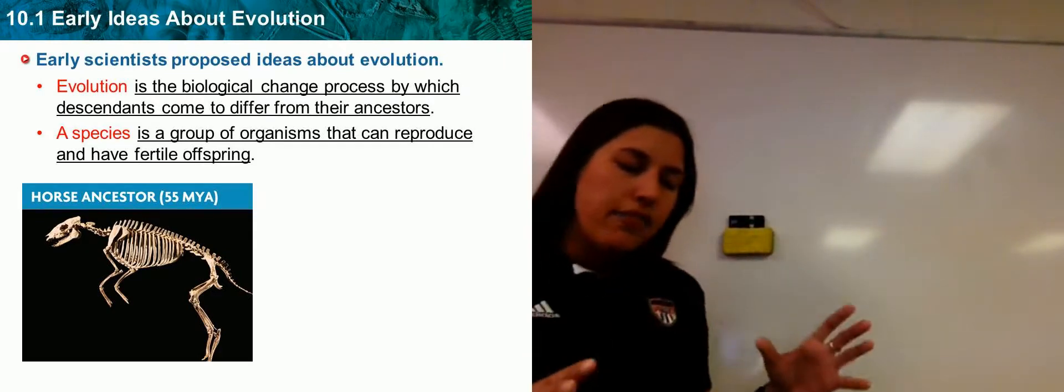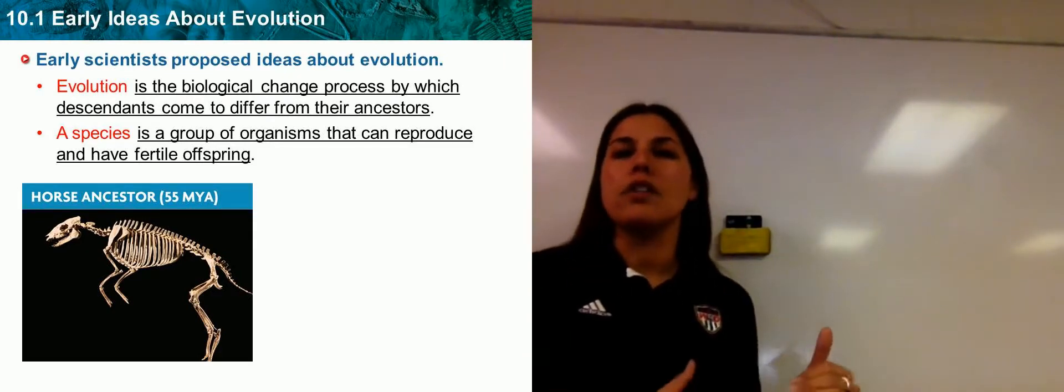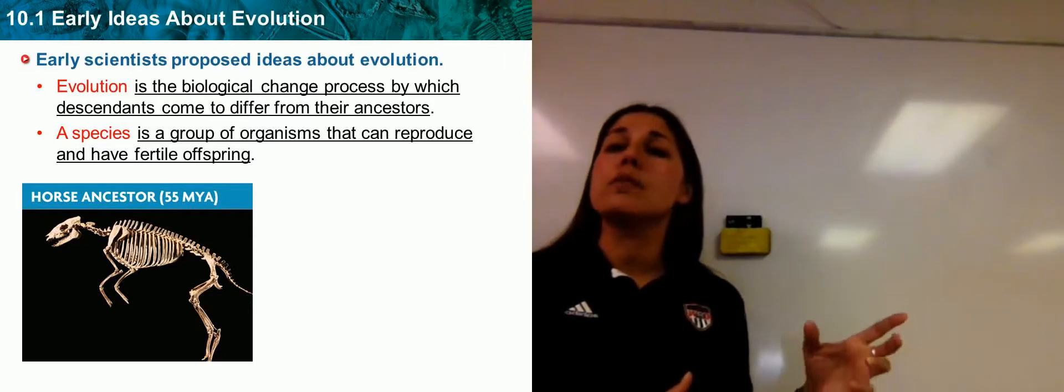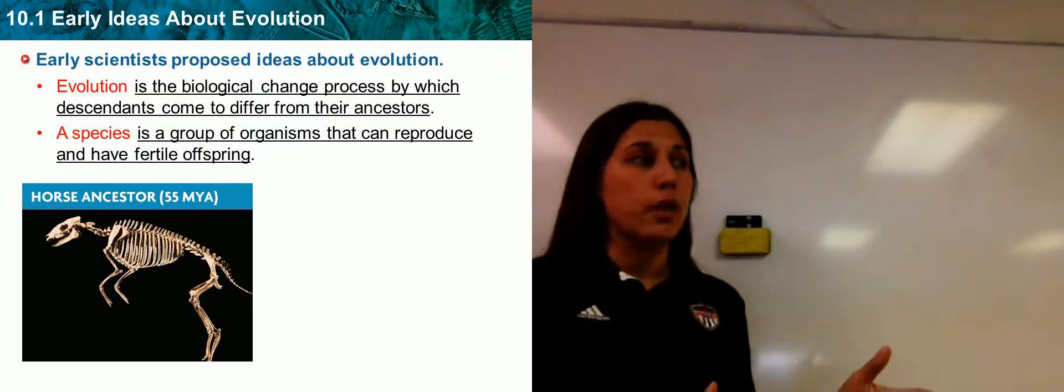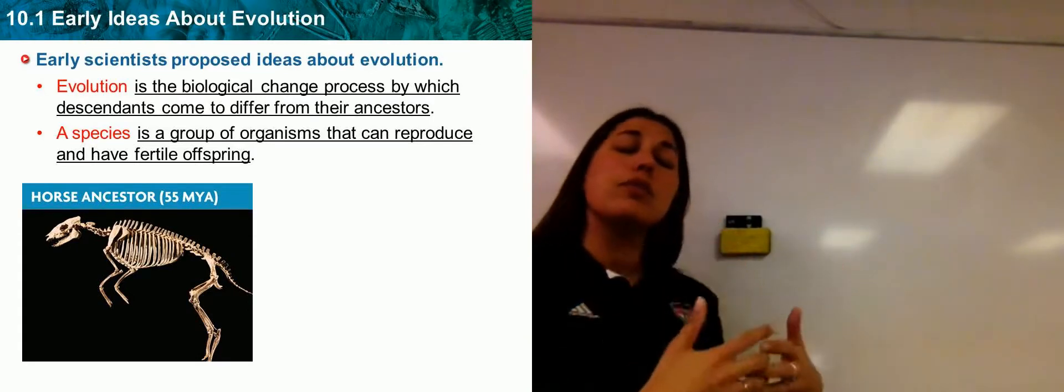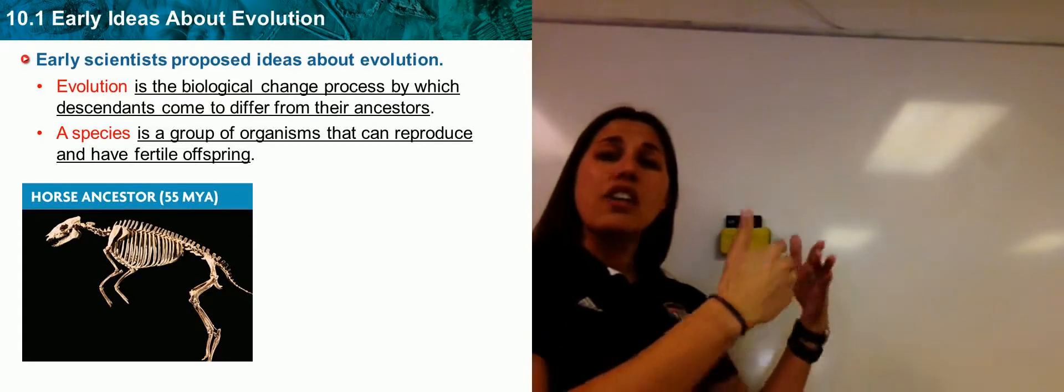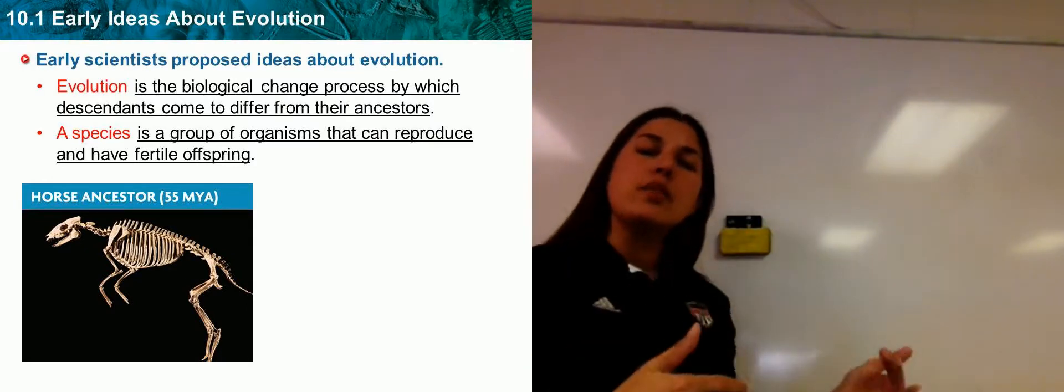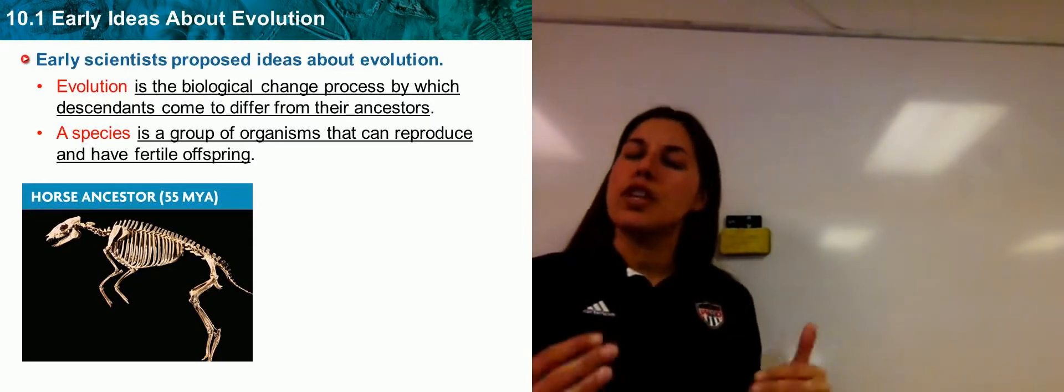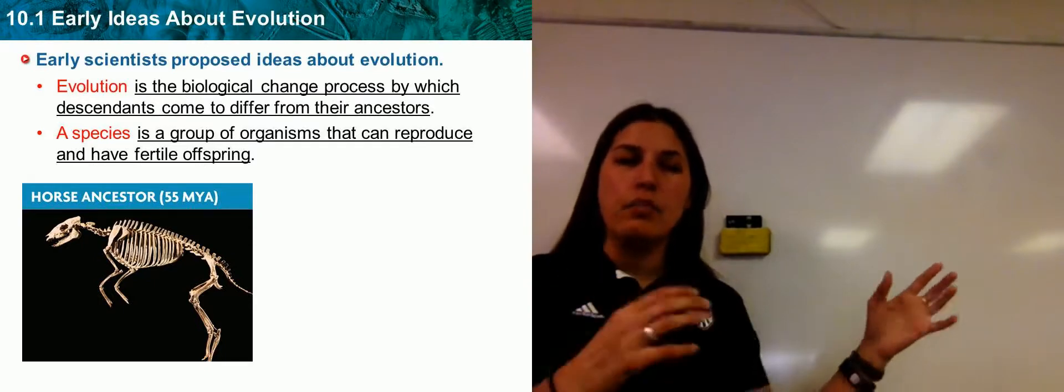Species, a basic definition, it's a group of organisms that can reproduce and more importantly reproduce and have fertile offspring. So it's not that you can reproduce and have offspring, but it's that your offspring can have offspring. That's going to play a key role as we look into evolution and how we look at the different theories that kind of patch this together.